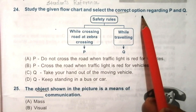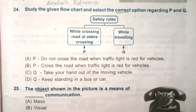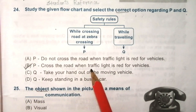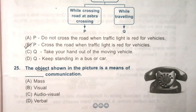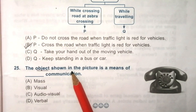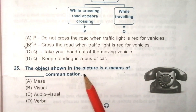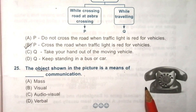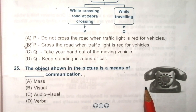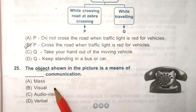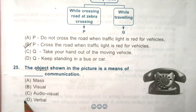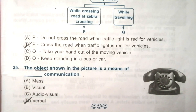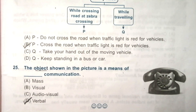Question 25: the object shown in the picture is a means of dash communication. The given picture shows a telephone. Options are: mass, visual, audio-visual, verbal. The answer is D — verbal.